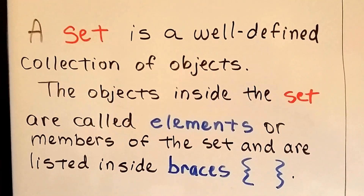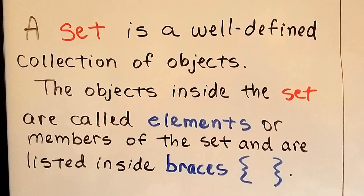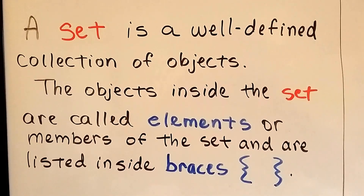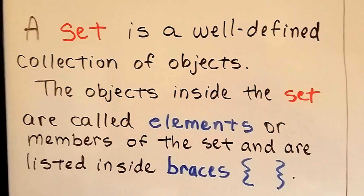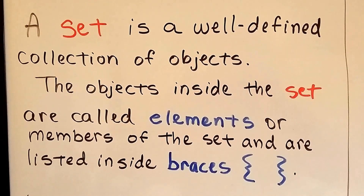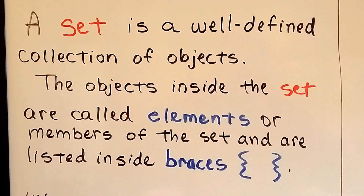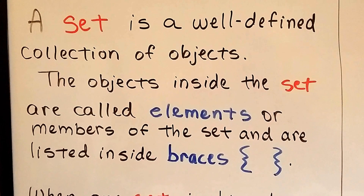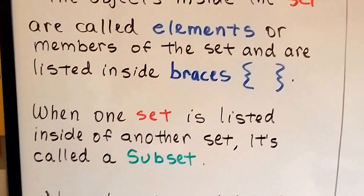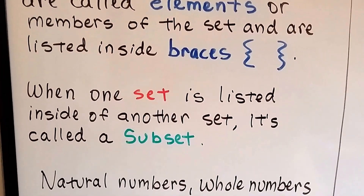A set is a well-defined collection of objects. The objects inside the set are called elements, or members of the set, and are listed inside of braces. So if we had a set of dogs, a different type of dog — like a beagle, a poodle, or a German Shepherd — would be a subset of the set of dogs. When one set is listed inside of another set, it's called a subset.